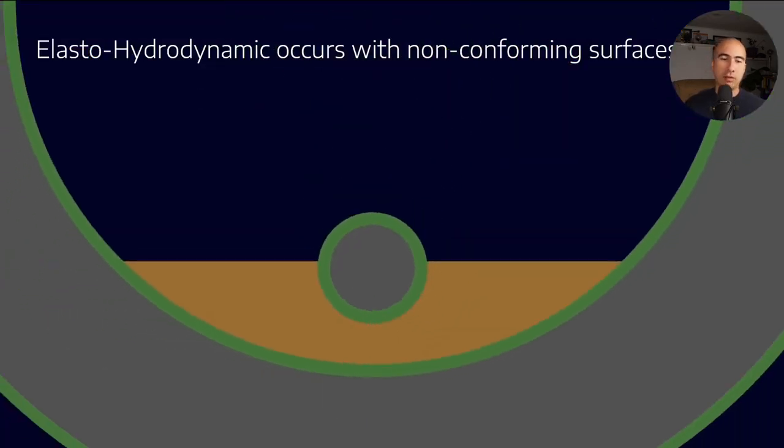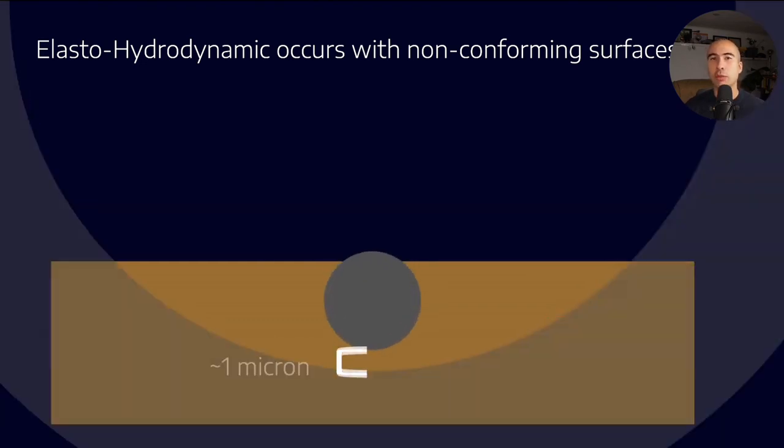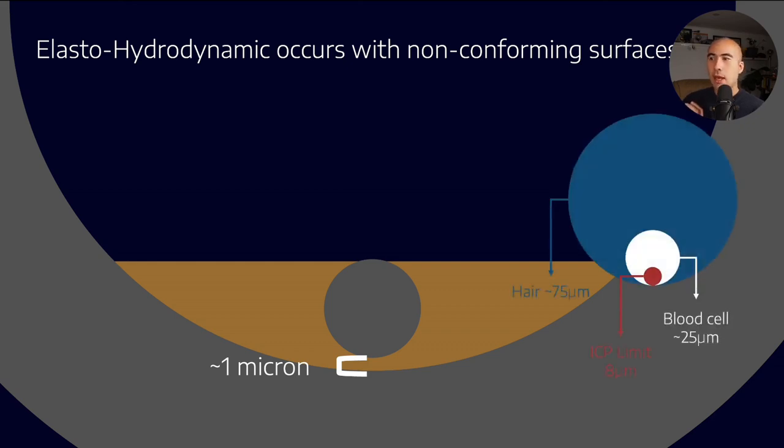With elasto-hydrodynamic lubrication, we have a substantially thinner lubricant film. Rather than 50 to 200 microns, we're talking single-digit microns. To give you an idea, a white blood cell is 25 microns, invisible to the naked eye. The ICP detection limit for oil analysis is about 8 microns.